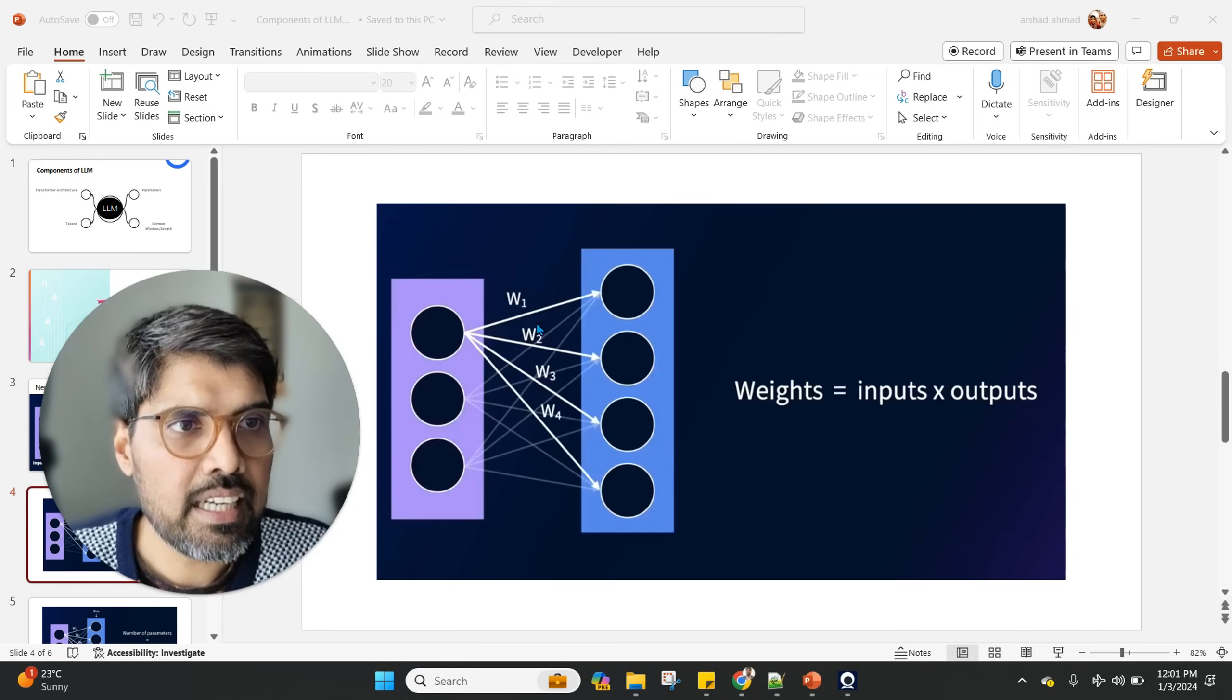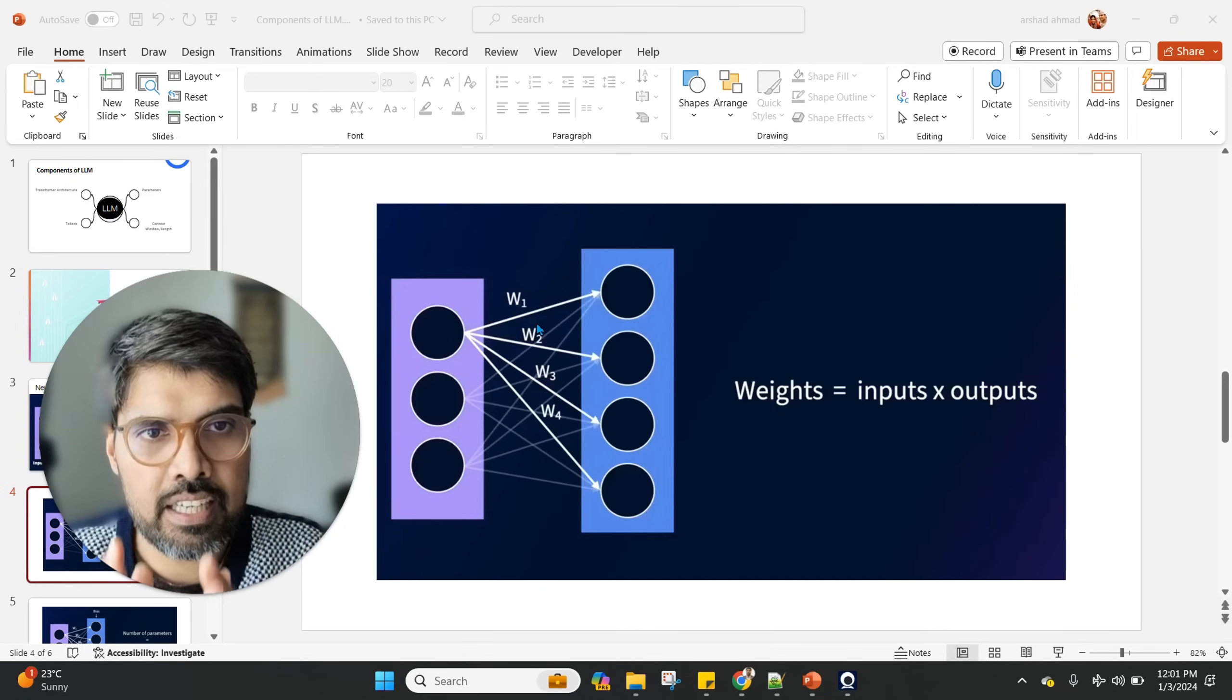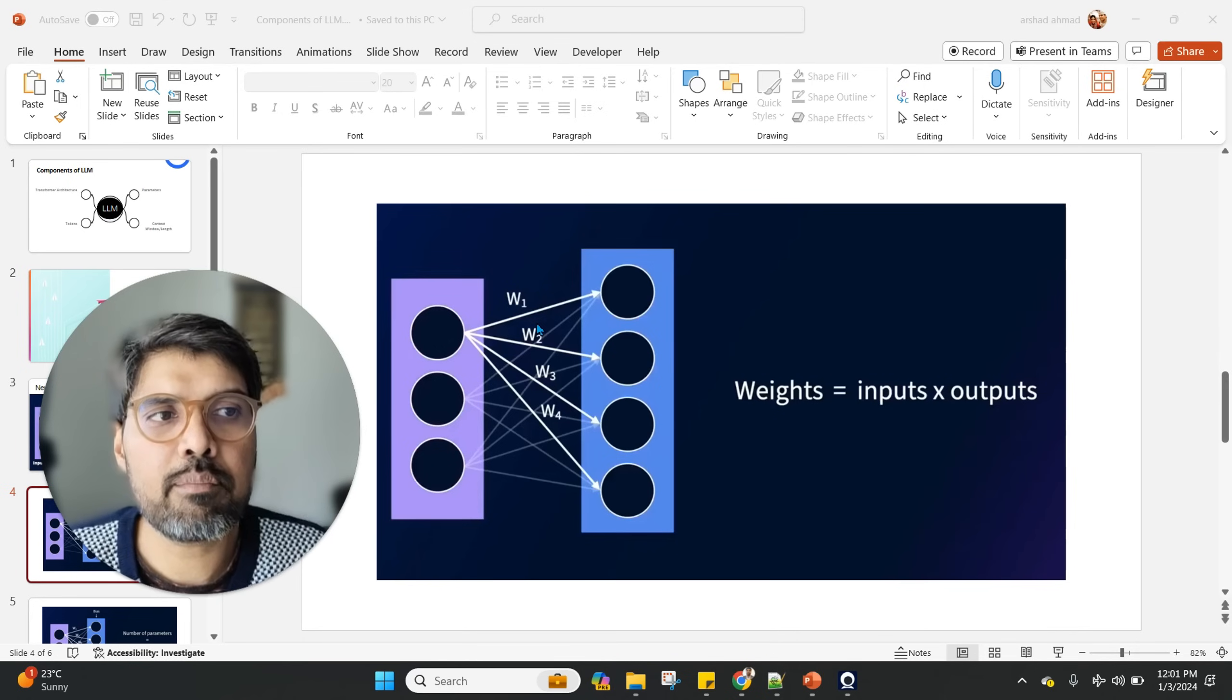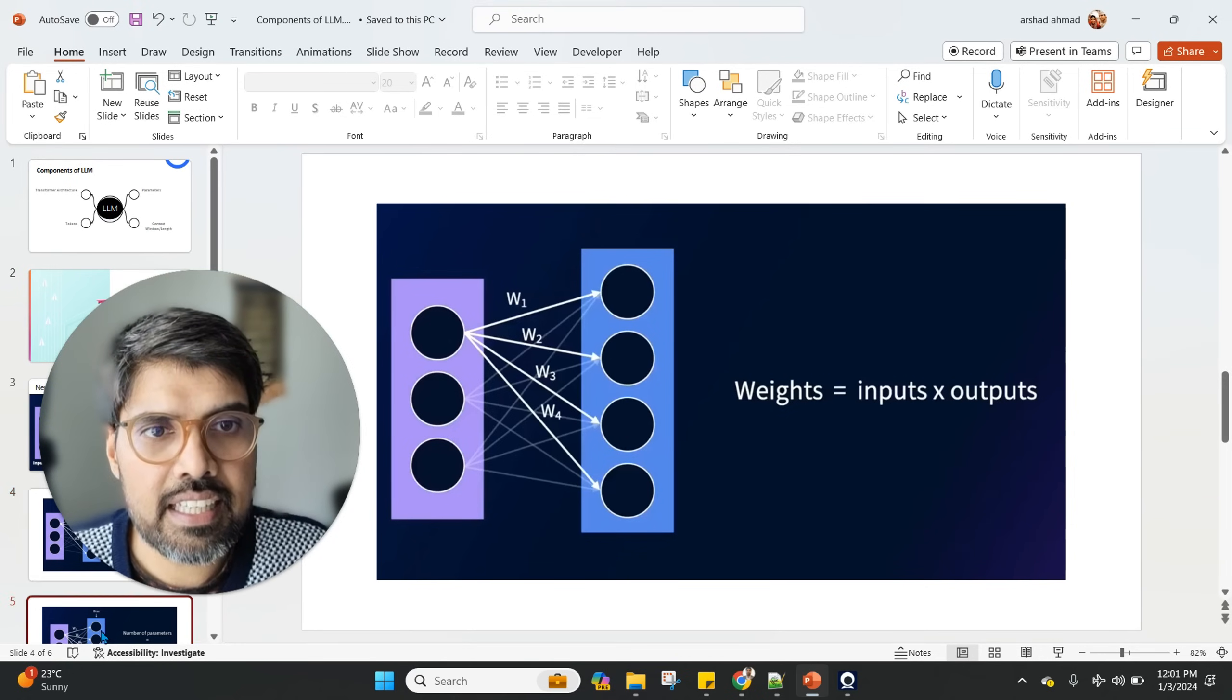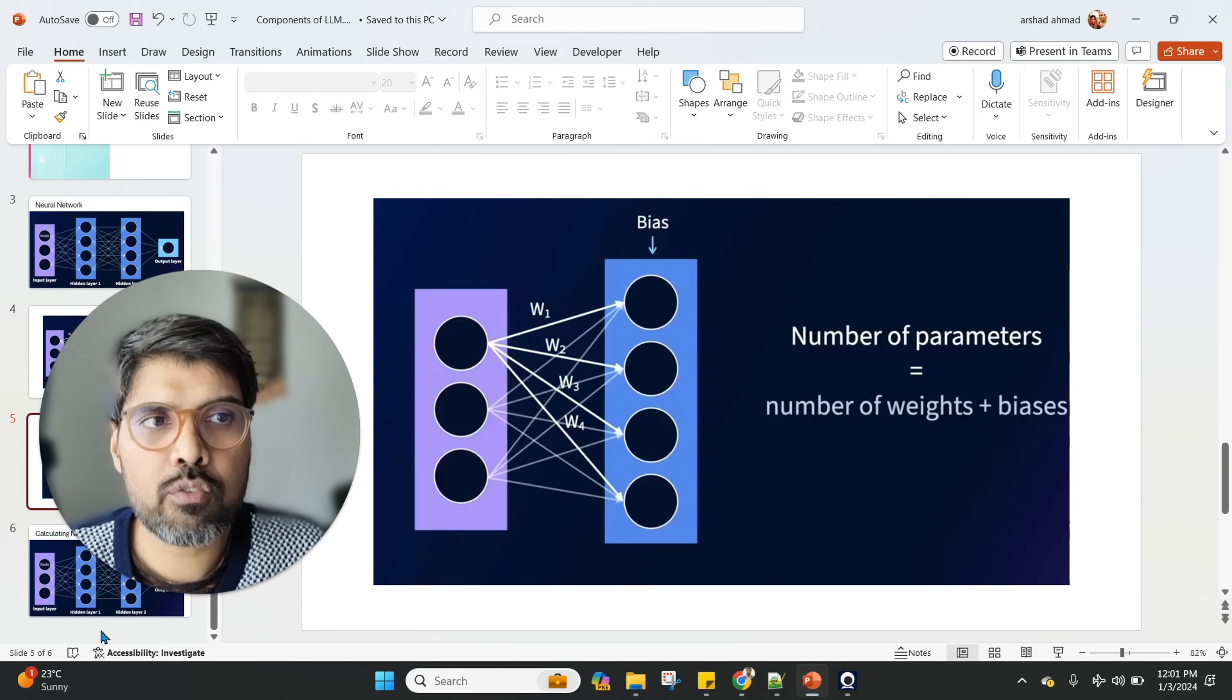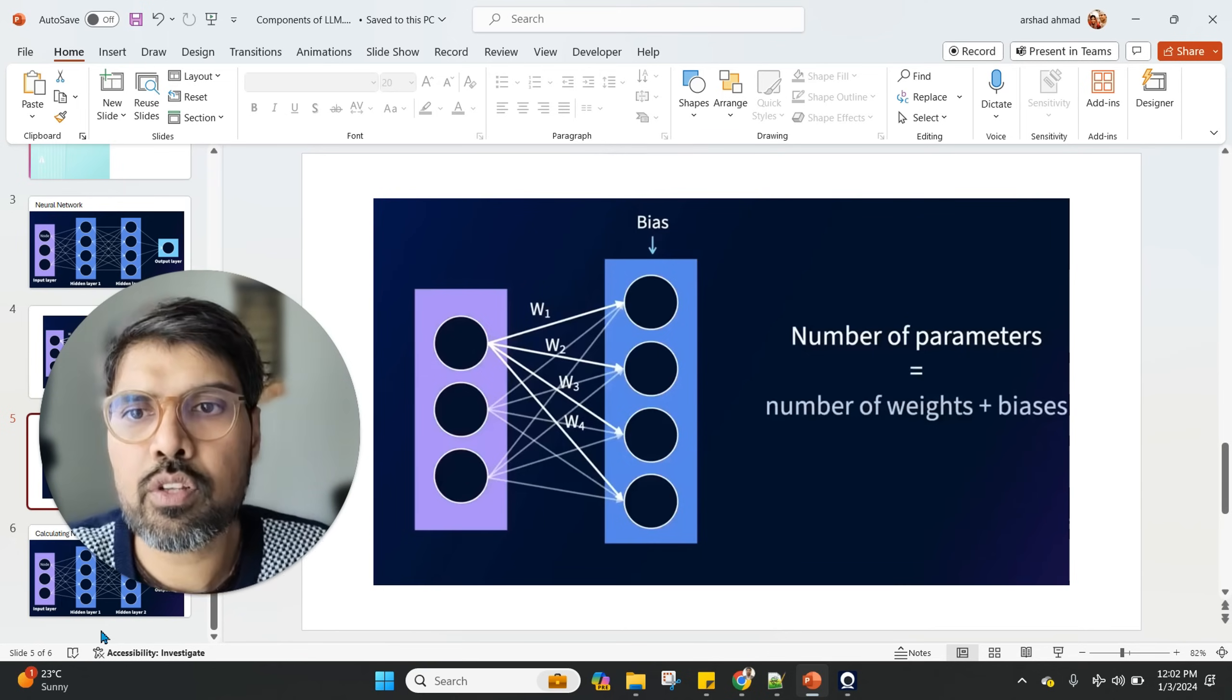As you can see, there are connections between the different layers, and they are calculated by weights. So weights equal inputs and biases. But the thing is, there is always a term of biasness because it is not exactly equal. The number of parameters is not only equal to the number of weights, but also equal to the number of weights plus the biases.